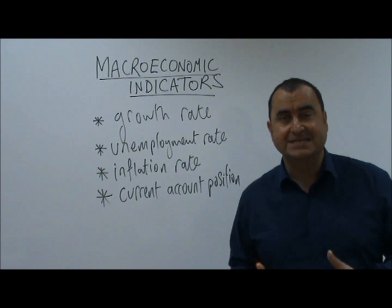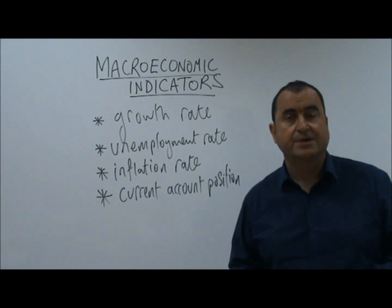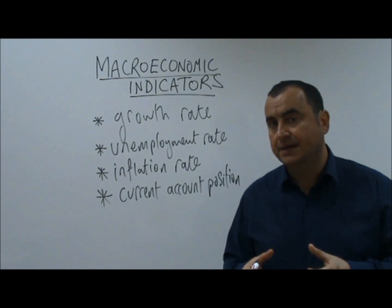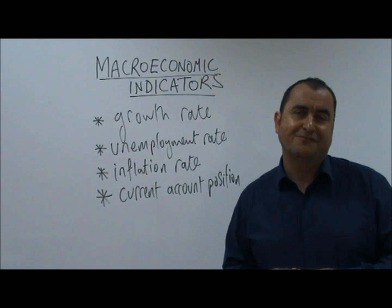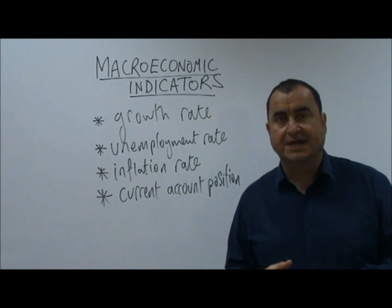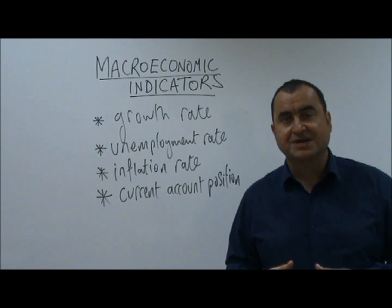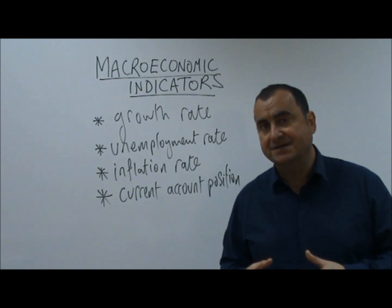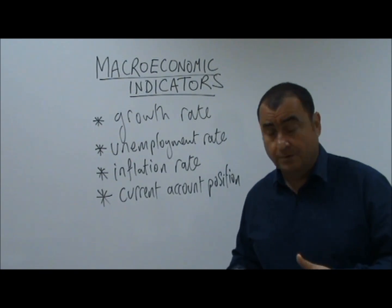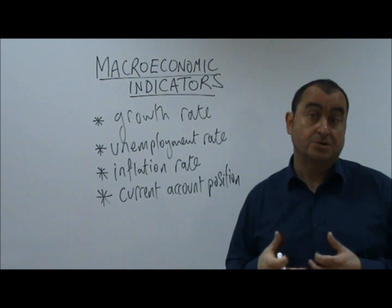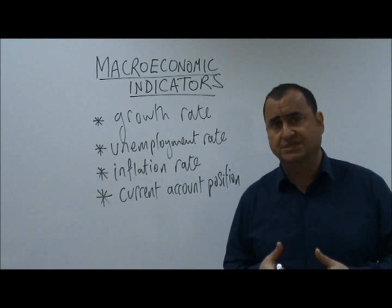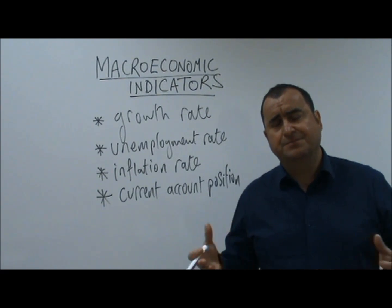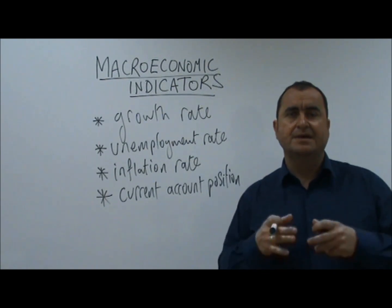These four would be the primary indicators used. Of course, they would also look at other things, such as the Gini coefficient, which records the relative inequality of income across citizens of an economy. They would also look at environmental data to assess damage from business activity, because it is not good to have rising GDP if it causes such damage to the environment that growth becomes unsustainable.